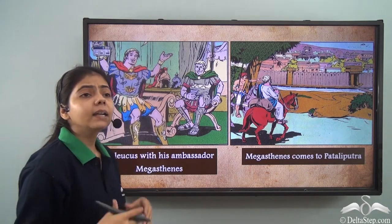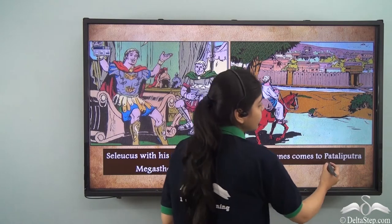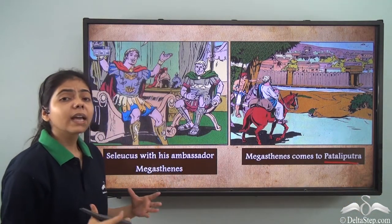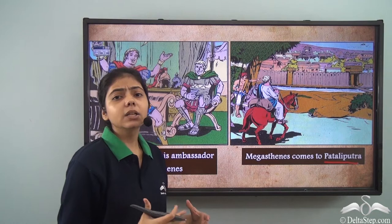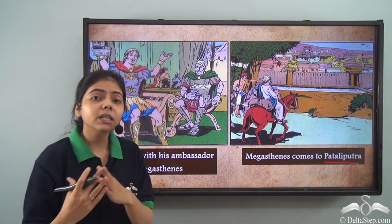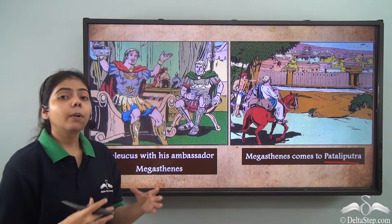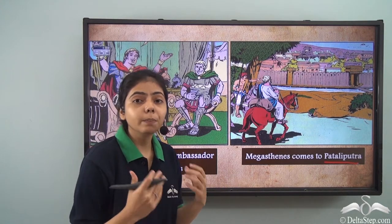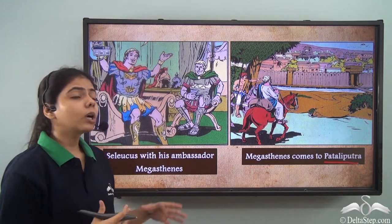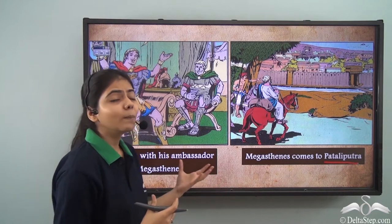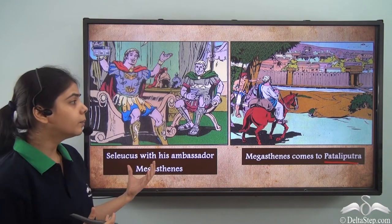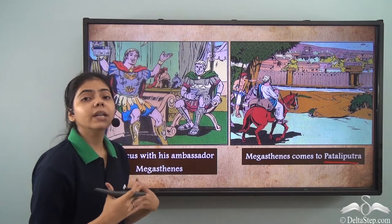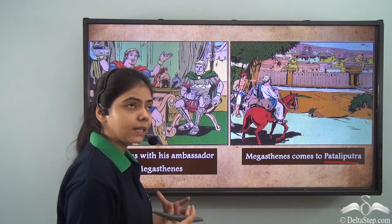It also had details about Patliputra, which was the capital city at that time — how the government in Patliputra was run and how beautifully the city was built. Megasthenes was very enthralled by the beauty of Patliputra, and he mentioned many things about it and about the government of the Mauryan Empire in the Indica.